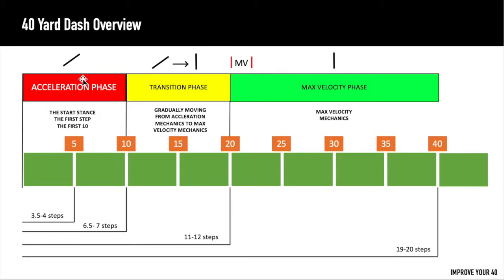In acceleration, you're going to have more of a forward lean. In transition, you're going to be transitioning from that forward lean to more of an upright posture. Then in max velocity, you're just going to maintain that upright posture.